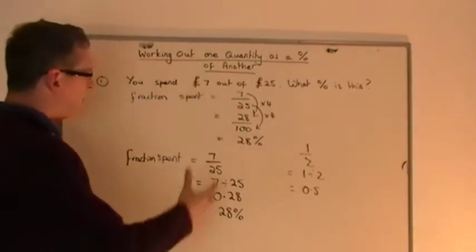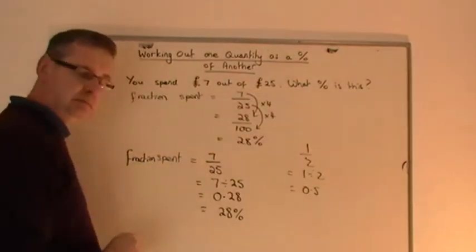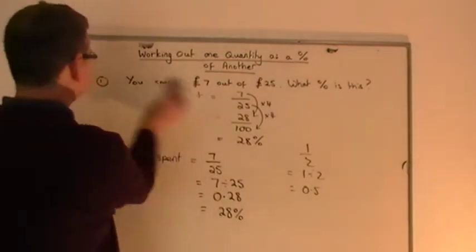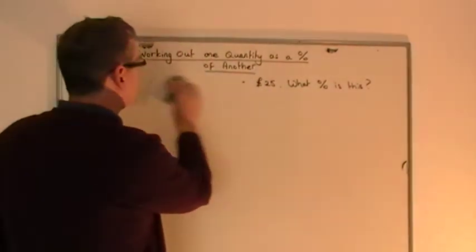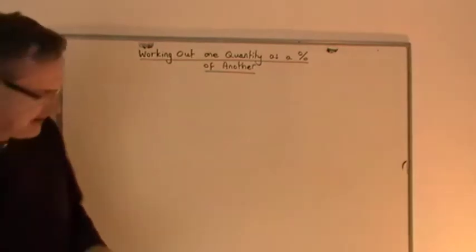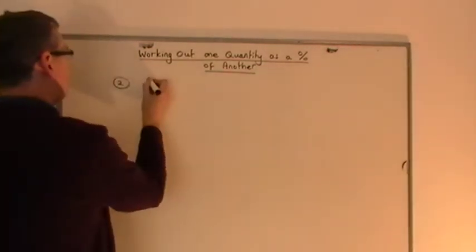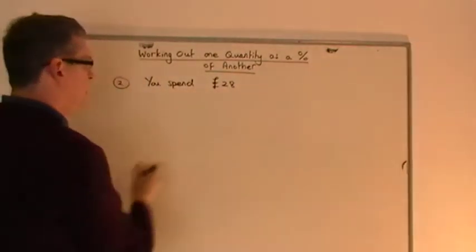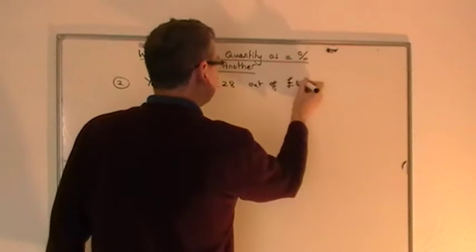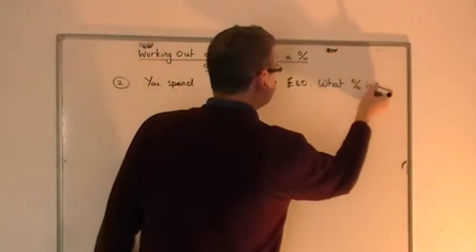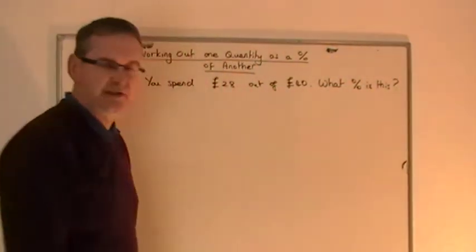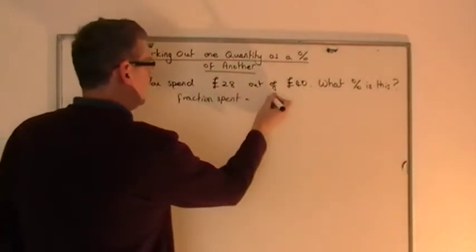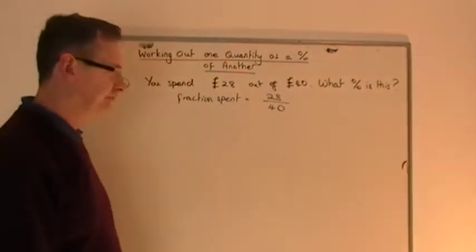I'm going to do question 2. Question 2, I'm just going to do it by the first method. And then question 3, I'll give you some really awkward figures, and we'll just do it by the calculator method. So very quickly then. Question 2. Let's say you spend, now let's make this one a bit harder, 28 pounds out of 40 pounds. And I want to know what percentage is this. So what percentage have you spent? Let's write down the fraction spent.